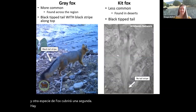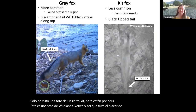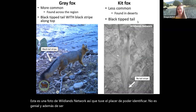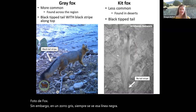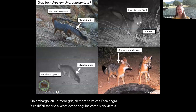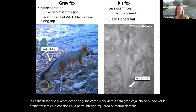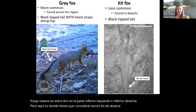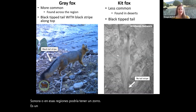There is another fox in this region — the kit fox. They're less common and found more in the deserts. Unlike the gray fox, they only have a black-tipped tail with no black line running down it. On a gray fox, you'll always see that black line. Kit foxes are far less common and found in the Sonoran Desert, so unless you're in those regions, a fox you see is probably a gray fox. But if you do get a kit fox, please let me know — I'd love to see more photos.